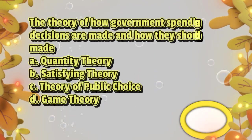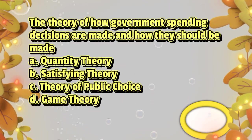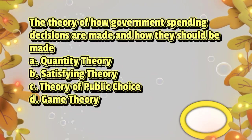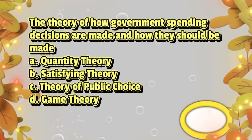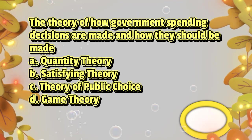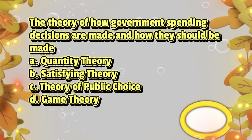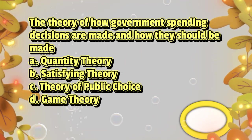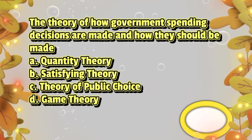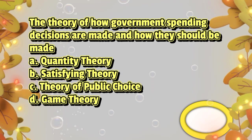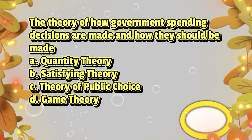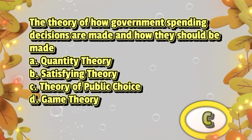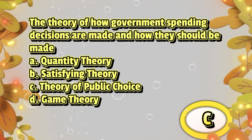The theory of how government spending decisions are made and how they should be made. A. Quantity theory. B. Satisfying theory. C. Theory of public choice. D. Game theory. The answer is letter C.